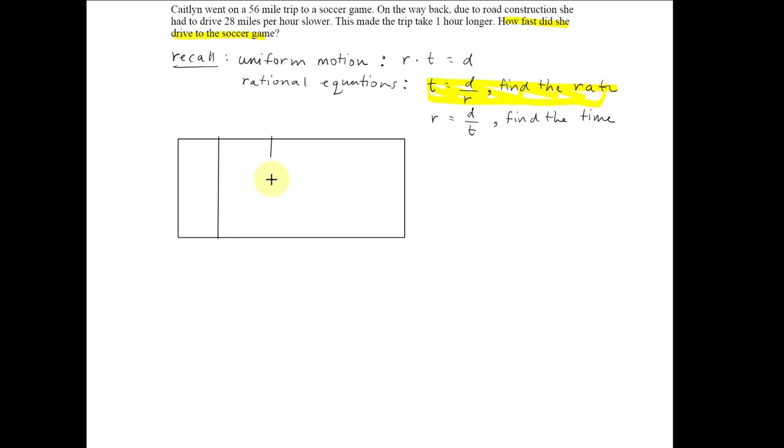So let's go ahead and make our table: r, t, and d. We have two categories, going to the soccer game and coming from the soccer game.